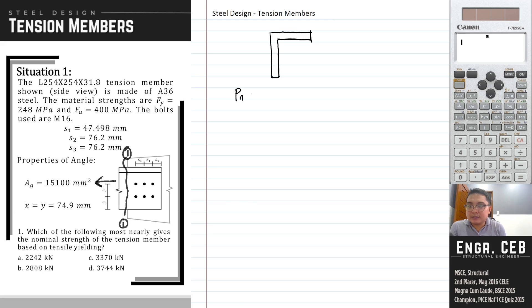Our formula for the nominal strength is simply Pn equals Fy times Ag. We substitute the value of Fy, that is 248 MPa, and the value of Ag, which is 15,100. Therefore, that is 3,744,800 N.